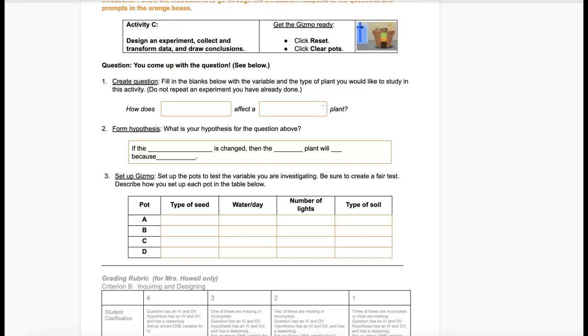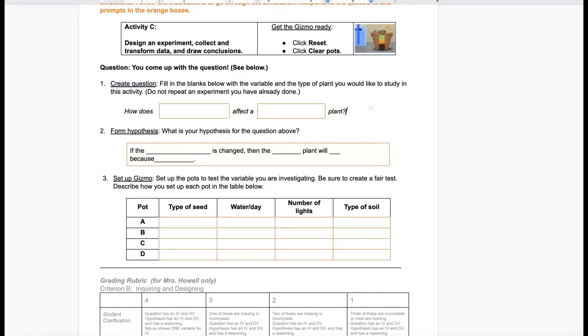To choose your independent variable, look at the data table on number three. These would be the different IVs. You can choose among these four things: the type of seed, the amount of water, the number of lights, or the type of soil. So choose one IV to put into your question.